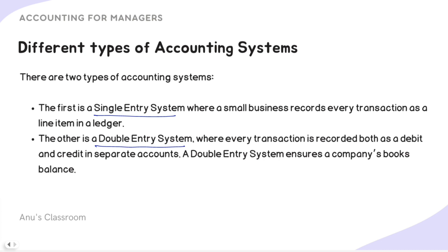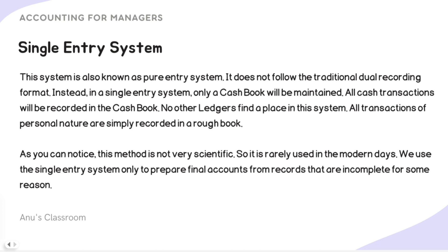In the double entry system, every transaction has both a debit and credit recorded in separate accounts, ensuring the company's books balance. The single entry system — also called a pure entry system — does not follow any dual recording format. There is no credit versus debit; just a single cash book is maintained, and all cash transactions are recorded in it. Even personal ledger transactions are simply recorded, just like writing in a rough book.